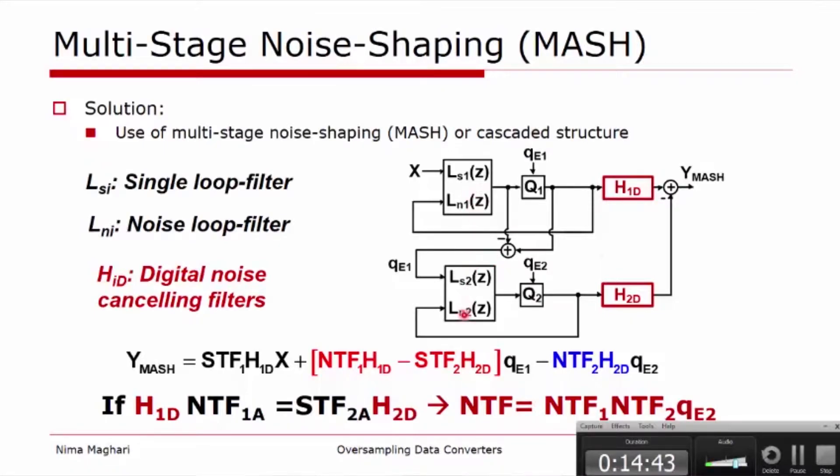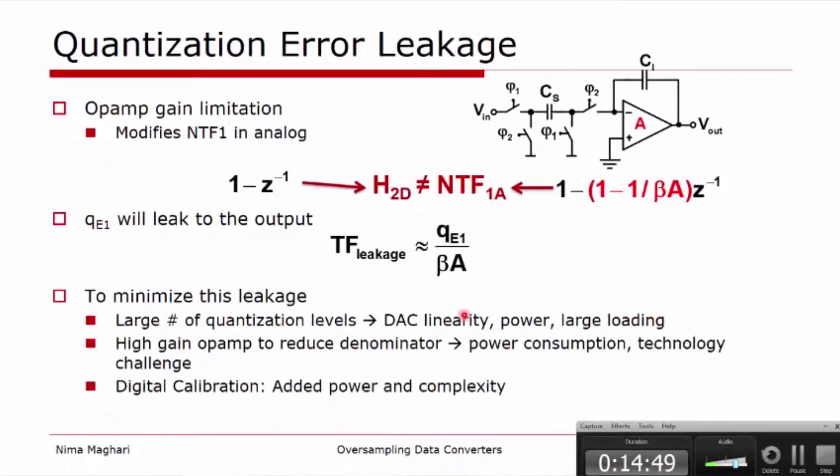The problem with these structures is, however, that there is a mismatch between the analog loop filter coefficient and the digital equivalent one. We want to match analog transfer function with digital ones. Therefore, here the circuit imperfections will cause possible leakage of the quantization error to the output, and unfortunately this leakage is not noise shaped.